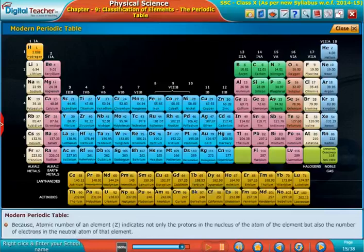Because atomic number of an element Z indicates not only the protons in the nucleus of the atom of the element but also the number of electrons in the neutral atom of that element.